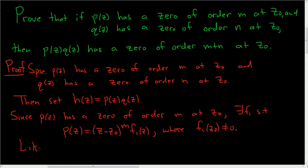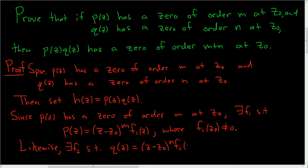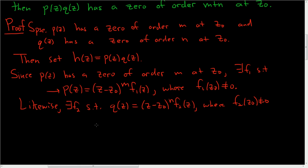Likewise, since Q of Z has a zero of order N at Z naught, there exists a polynomial function F2 such that Q of Z is equal to Z minus Z naught to the N times F sub 2 of Z, where F sub 2 of Z naught is not equal to zero. This is what it means for P to have a zero of order M and for Q to have a zero of order N.